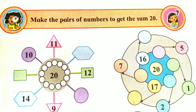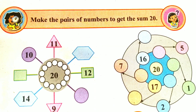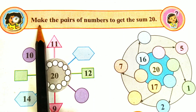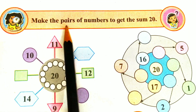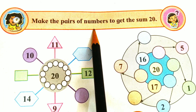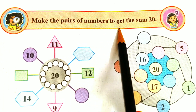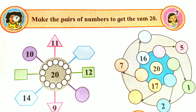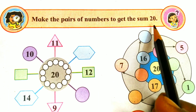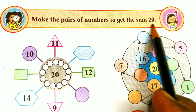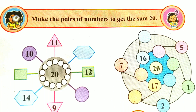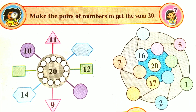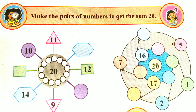Welcome children. Today we are going to learn to make the pairs of numbers to get the sum 20. As upon wish, 20 berries — we have to find the pairs of numbers. Let's start.